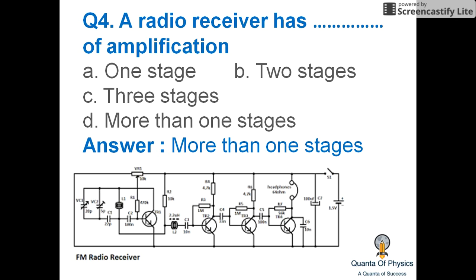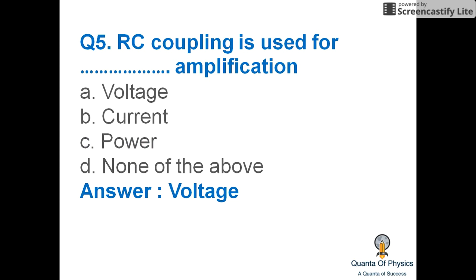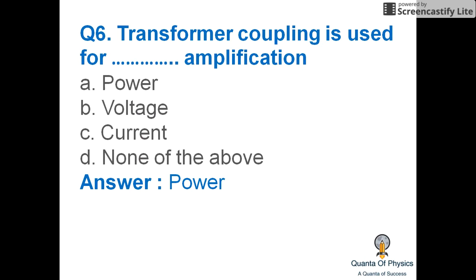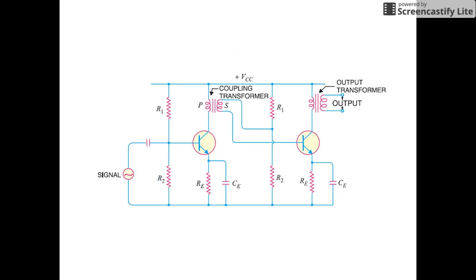A radio receiver has more than one stage of amplification; for example, an FM radio receiver uses multiple amplification stages. RC coupling is used for voltage amplification — this is the RC coupled amplifier, where a capacitor is used between the output and input of two amplifiers.